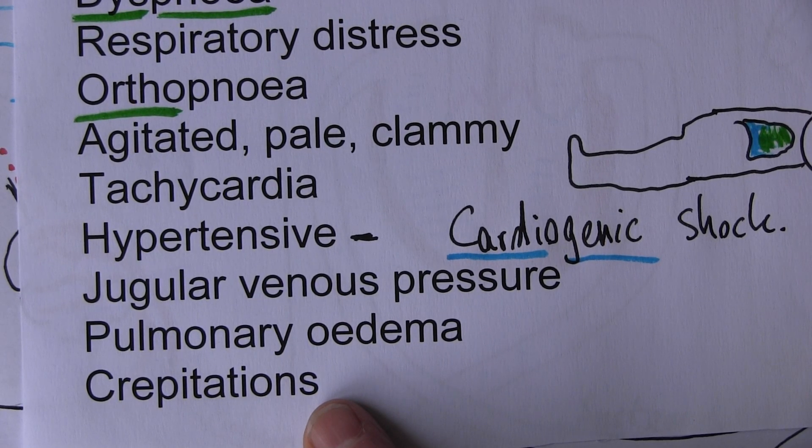If you listen to the heart by auscultation, if there's valvular failure, you'll hear a murmur. Acute left heart failure is also associated with a triple gallop rhythm of the heart.